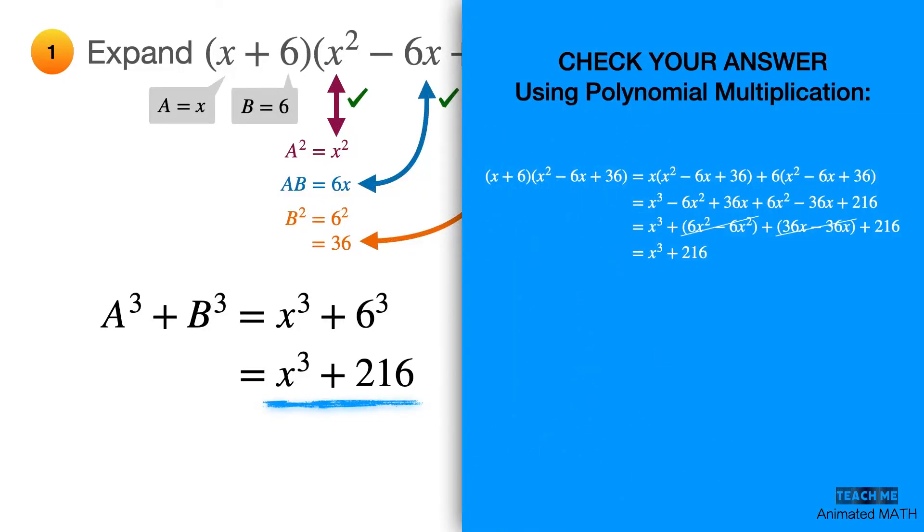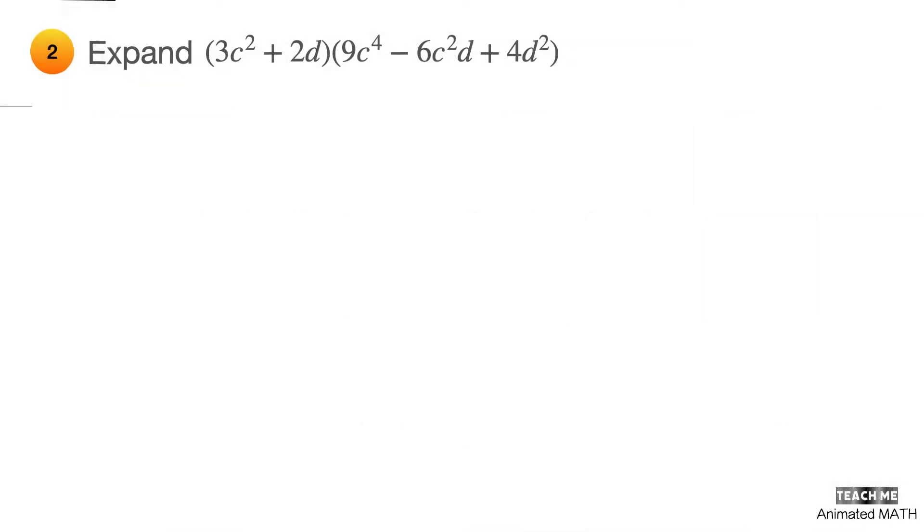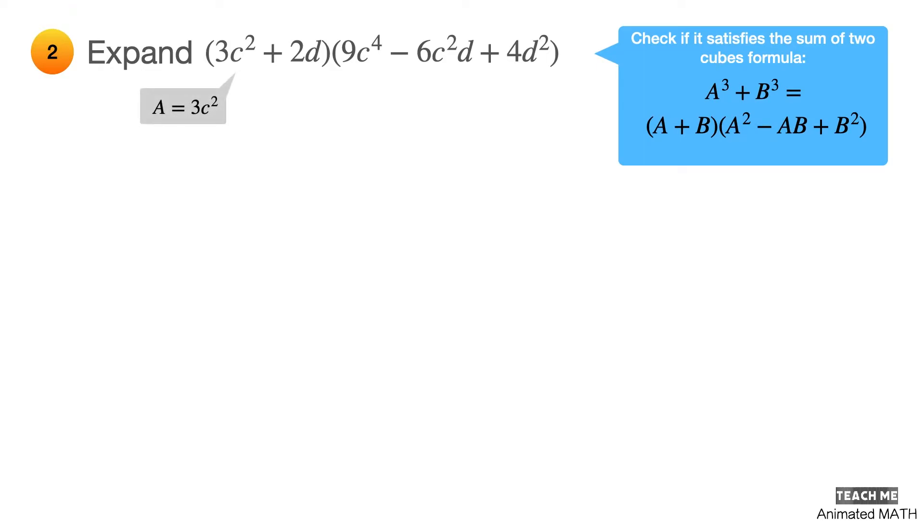This example contains more complex-looking terms, and if you're not careful with the computations, then there is a huge risk of getting the wrong answer. Let's check if it satisfies the sum of two cubes formula. First, assume that a is equal to 3c squared and b is equal to 2d.